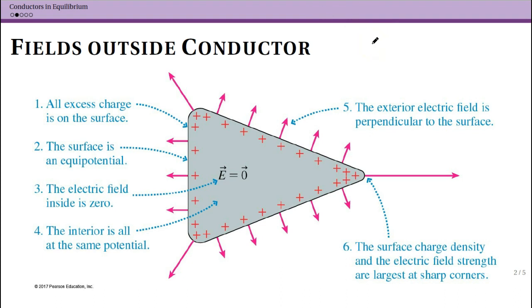So now what about the fields outside of a conductor? We know that all of our excess charge is on the surface. We already knew that because they're spreading out, and otherwise you would actually be having electric fields on the inside. You can think about Gauss's law: if I draw a surface here and say there's no net charge enclosed, then I know my flux is zero and that's going to be true if my electric field is zero.